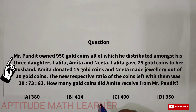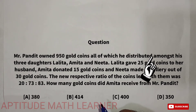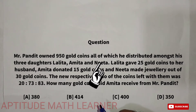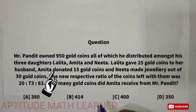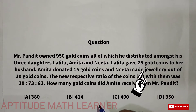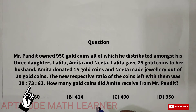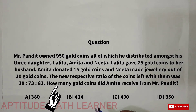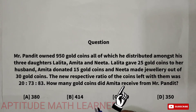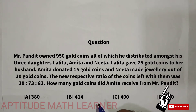The question is: Mr. Pandit owned 950 gold coins, all of which he distributed amongst his three daughters — Lalitha, Amita, and Nita. Lalitha gave 25 gold coins to her husband, Amita donated 15 gold coins, and Nita made jewelry out of 30 gold coins. The new respective ratio of the coins left with them was 20:73:83.